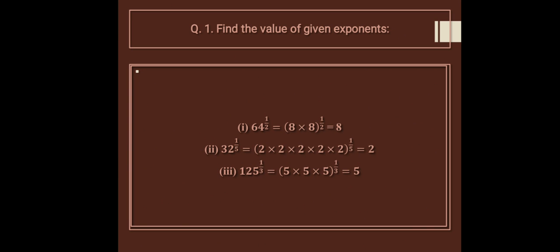32 raised to the power 1 upon 5 — 1 upon 5 means this is 1/5 time of 32. You multiply it 5 times: 2 into 2 into 2 into 2 into 2, so the 1/5th root of 32 is 2.